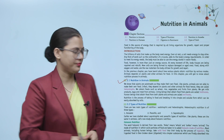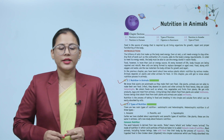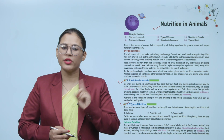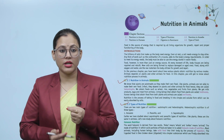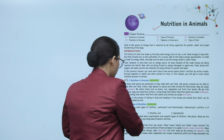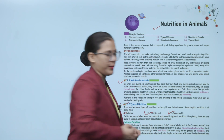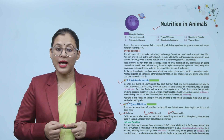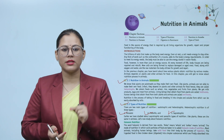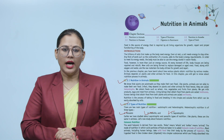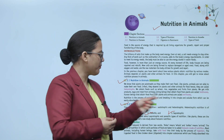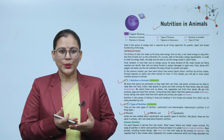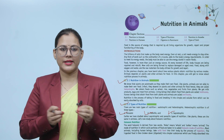There are two main types of nutrition: autotrophic and heterotrophic — as we discussed in the previous chapter. Heterotrophic nutrition is of three types: holozoic, parasitic and saprotrophic. We have already studied saprotrophic and parasitic types of nutrition in plants; these are the same in animals. Let's now study holozoic nutrition.